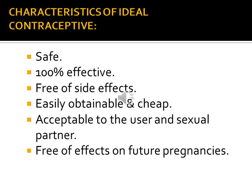What is ideal contraception? There is still no ideal contraception. To reach the ideal, a contraceptive should be safe, effective, have no side effects, be easily obtainable and cheap, acceptable to the user and partner, not interfere with sexual intercourse, and if pregnancy does occur, have no effect on future pregnancies.